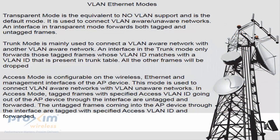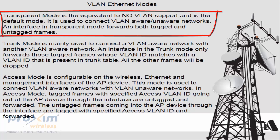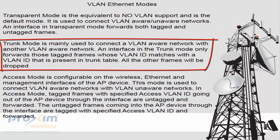The AP8100, 8000, and 800 support the following Ethernet modes. Transparent mode is the equivalent of no VLAN support and is the default mode. It is used to connect VLAN-aware and VLAN-unaware networks, and an interface in transparent mode forwards both tagged and untagged frames. Trunk mode is mainly used to connect a VLAN-aware network with another VLAN-aware network. An interface in trunk mode only forwards tagged frames whose VLAN ID matches one in the trunk table; all other frames are dropped.